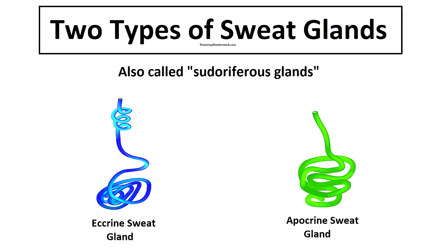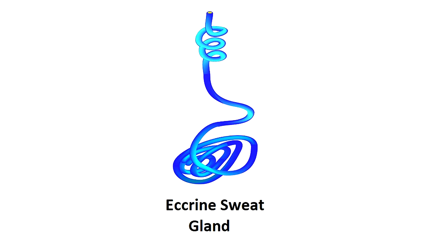The skin contains two main types of sweat glands, which are also referred to as sudoriferous glands. That's just a fancy word from the Latin that means bearing sweat.